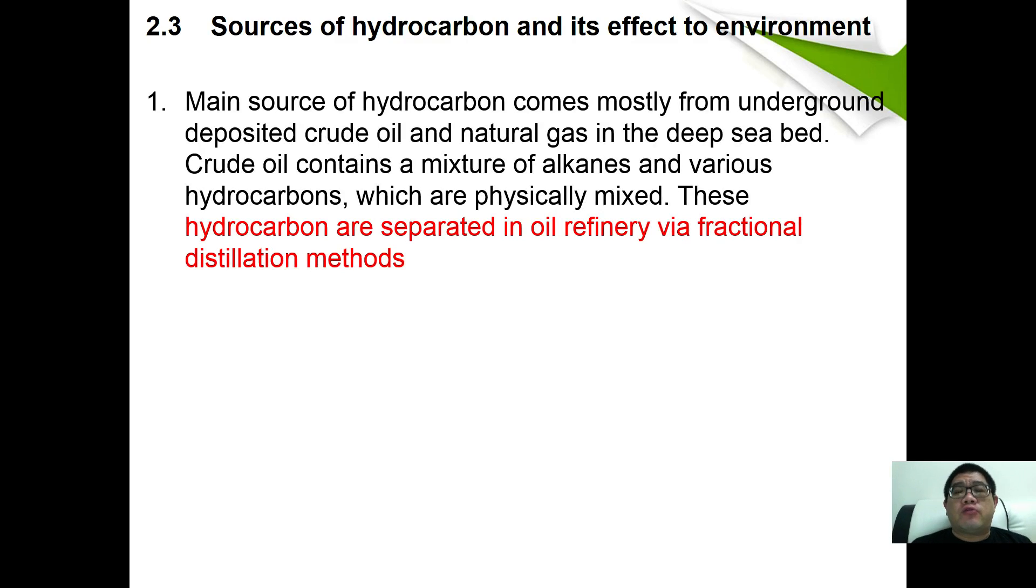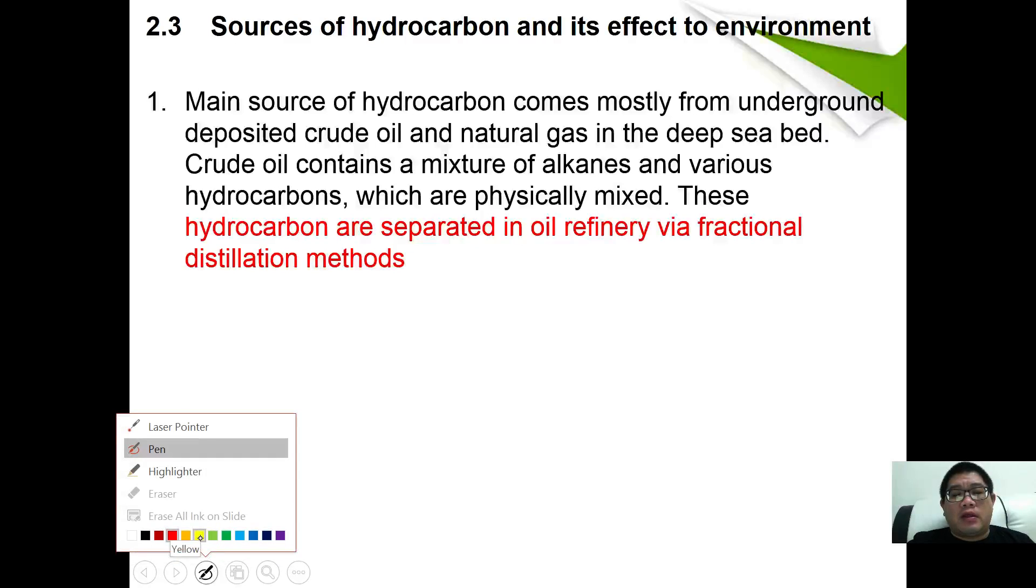Main sources of hydrocarbon usually come from underground deposited crude oil or natural gas. Crude oil contains a lot of alkanes and various hydrocarbons which are physically mixed. Therefore, these hydrocarbons are usually separated by oil refinery via fractional distillation methods.